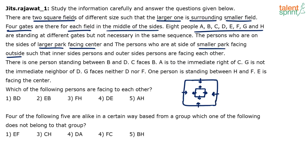Now we have three or four statements to arrange the eight persons. The biggest question is which four are on the outer field and which four are on the inner field. Clue one: there is one person standing between B and D — so B and D are alternate on the same field. Clue two: there is one person standing between E and D. So clearly B and D are on the same side — the same square field.